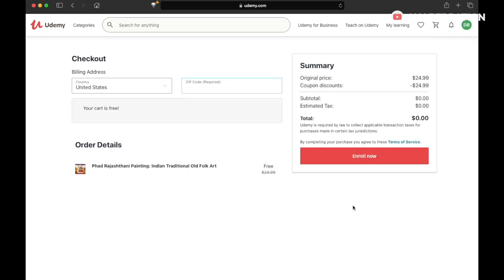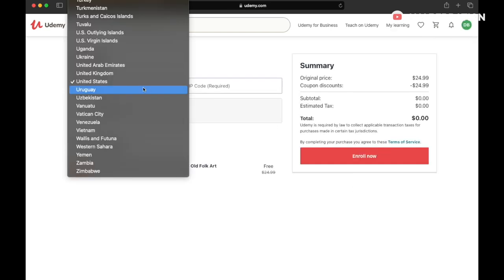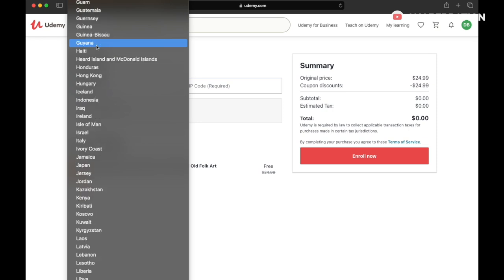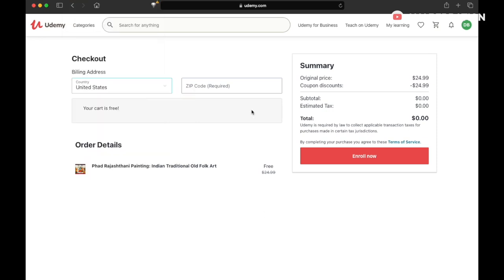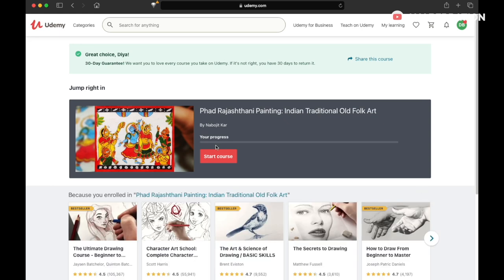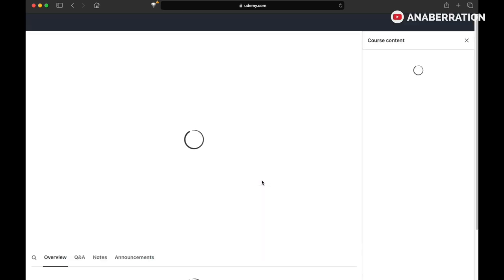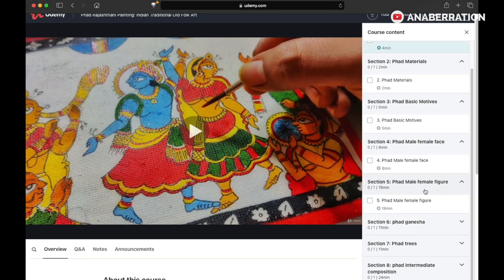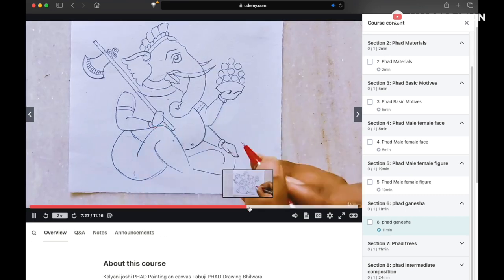After the sign up this billing address page will come up. This shows that the course is free. You just need to put your address and also your pin code, and after that click on enroll now button. After that it's very easy. You can start the course from there. You just click start the course and you can see a plethora of videos on that topic.